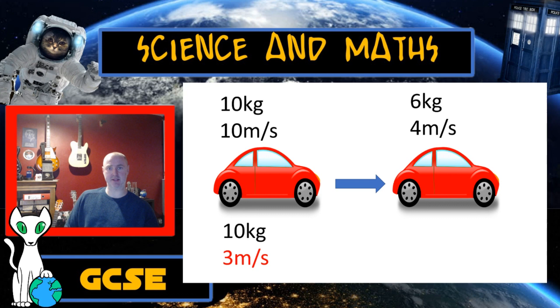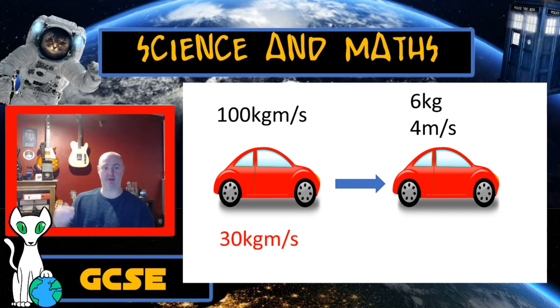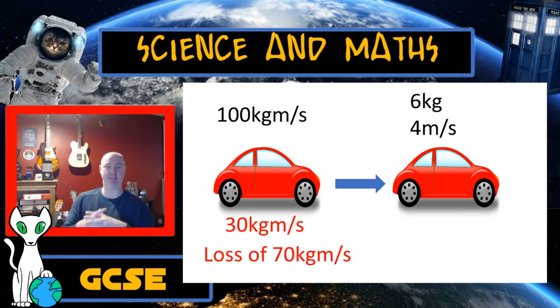So our first step is to calculate how much momentum the car on the left has lost. Well, when it was traveling at 10 meters per second, its momentum was 10 times 10, 100 kilogram meters per second. After striking the car in front and it slows down to 3 meters per second, 10 times 3 gives us 30 kilogram meters per second. So the car on the left has lost 70 kilogram meters per second.